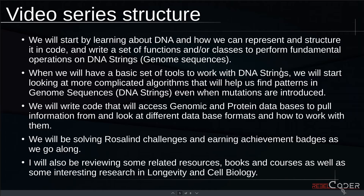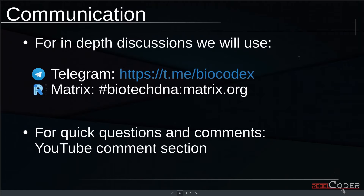I will also be reviewing related resources, books, and courses throughout our videos. Communication is going to happen through two channels: Telegram for quick questions and discussions, and Matrix for more in-depth discussions. Matrix is an open source standard — it's like Slack but completely open source — and we are going to be using only open source tools in our course. Matrix lets you paste and format code snippets, making it much easier to discuss code as a community. And of course, for quick questions and comments, we'll use the YouTube comments section.